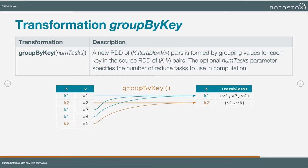The group by key transformation is pretty intuitive. Some of the transformations in the last section were a little hairy, but this one is easy to understand. We take the input RDD, get all of the unique key values — K1 and K2 in the source RDD. The output RDD has an iterable or collection of the values found with that key. So for K1 we have V1, V3, and V4; for K2 we have V2 and V5. It groups things up by key and gives us a collection of values in the output RDD.